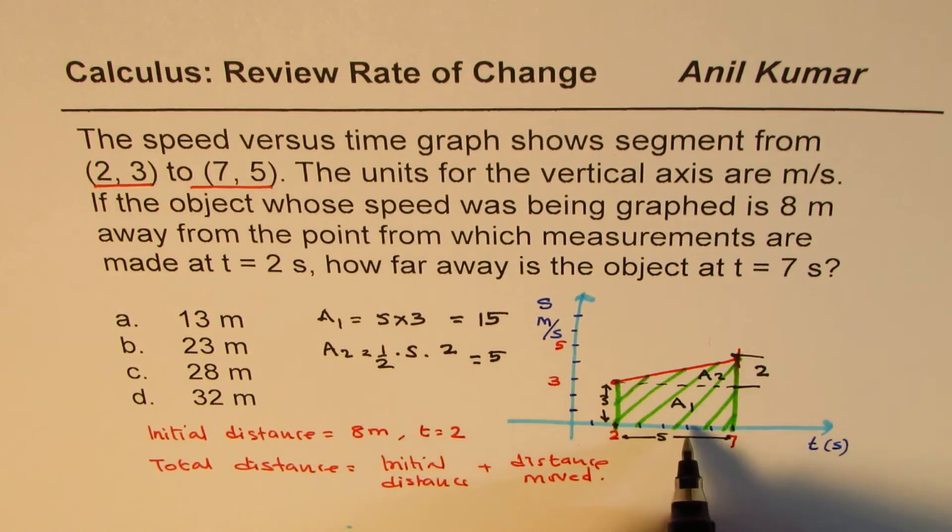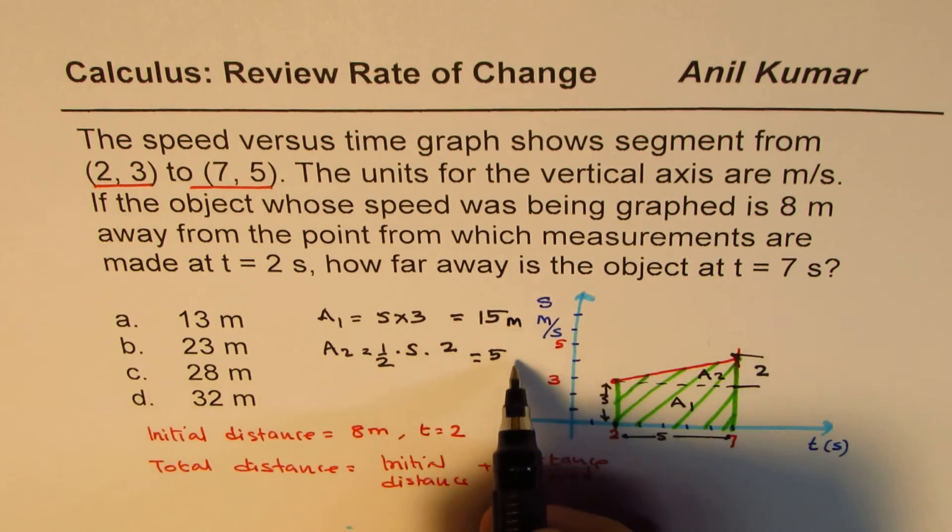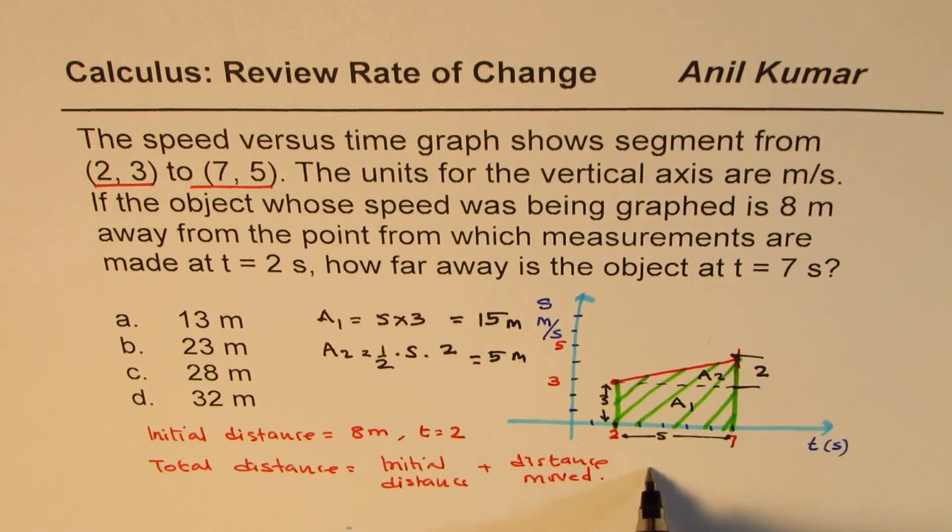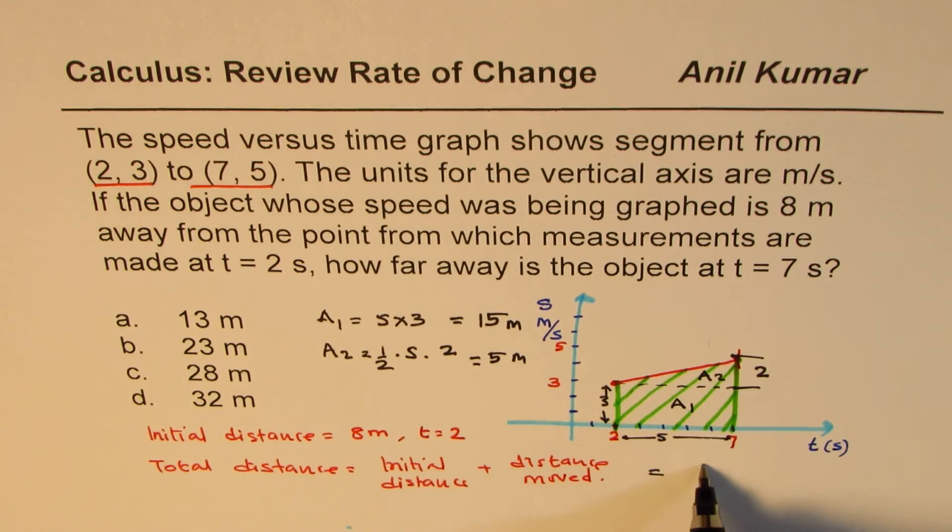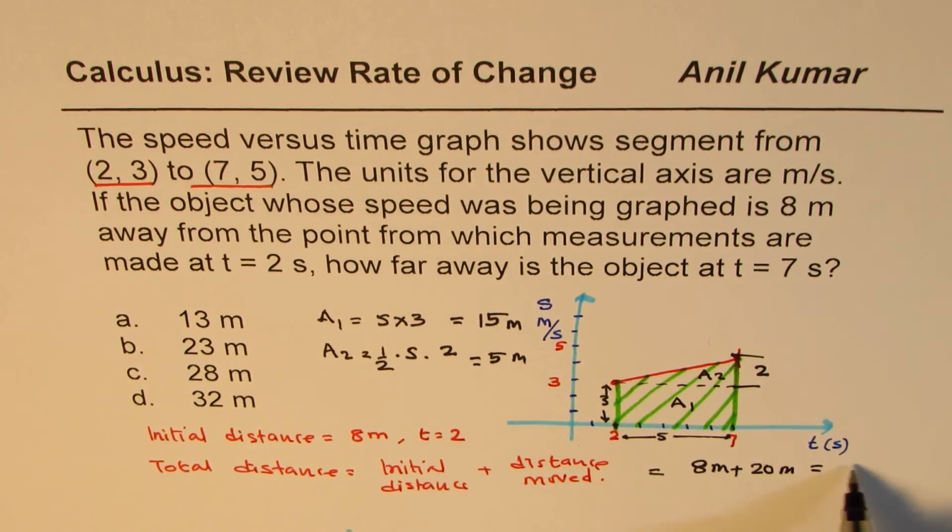So this area is 20, 20 meters. Now we know that the initial distance is 8 meters plus 20 meters, and that gives us 28 meters.